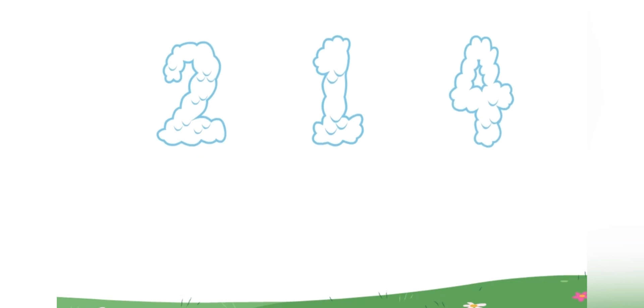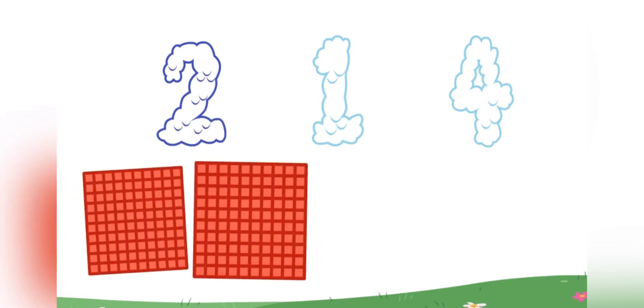I love looking for numbers in the clouds. Oh, look at that one. Let's figure out how many hundreds, tens, and ones it has. This number is in the hundreds place. It tells us that there are two groups of a hundred.